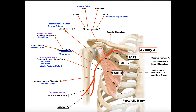The first branch of part three is the subscapular artery. It directly supplies two important muscles: subscapularis and teres major. However, the subscapular artery further bifurcates into the circumflex scapular artery and the thoracodorsal artery. The thoracodorsal artery supplies latissimus dorsi — which is also innervated by the thoracodorsal nerve, so both the artery and nerve share the same name for this muscle.